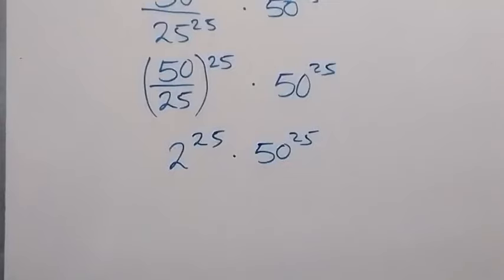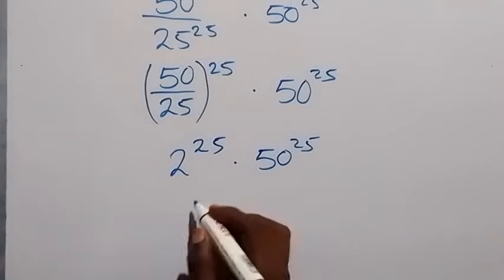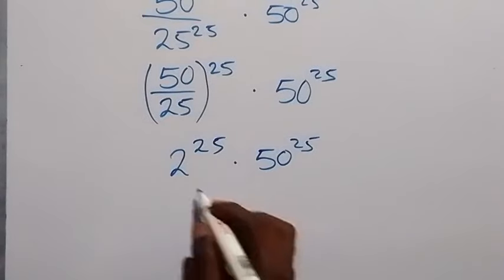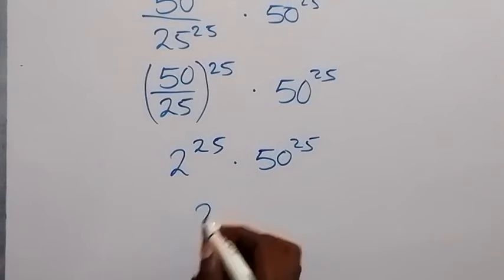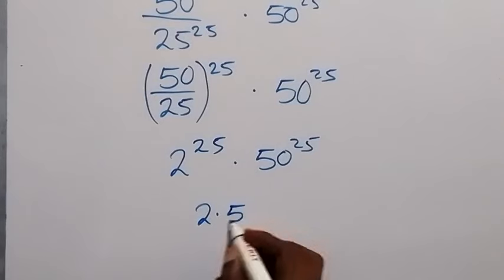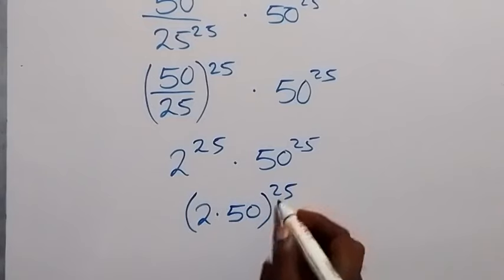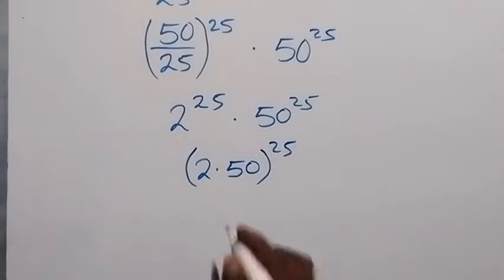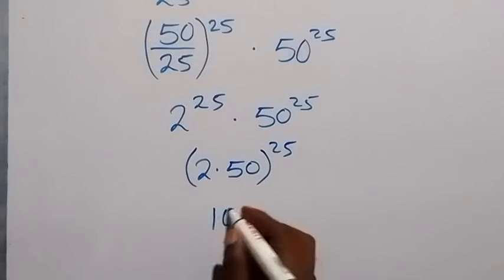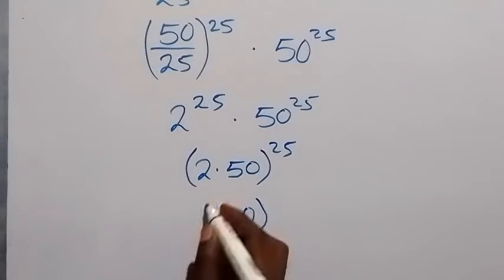From here, we can also apply the law of indices. If we have the same power, we can bring this together and we have 2 times 50 raised to power 25. And 2 times 50 can be written as 100, which is raised to power 25.